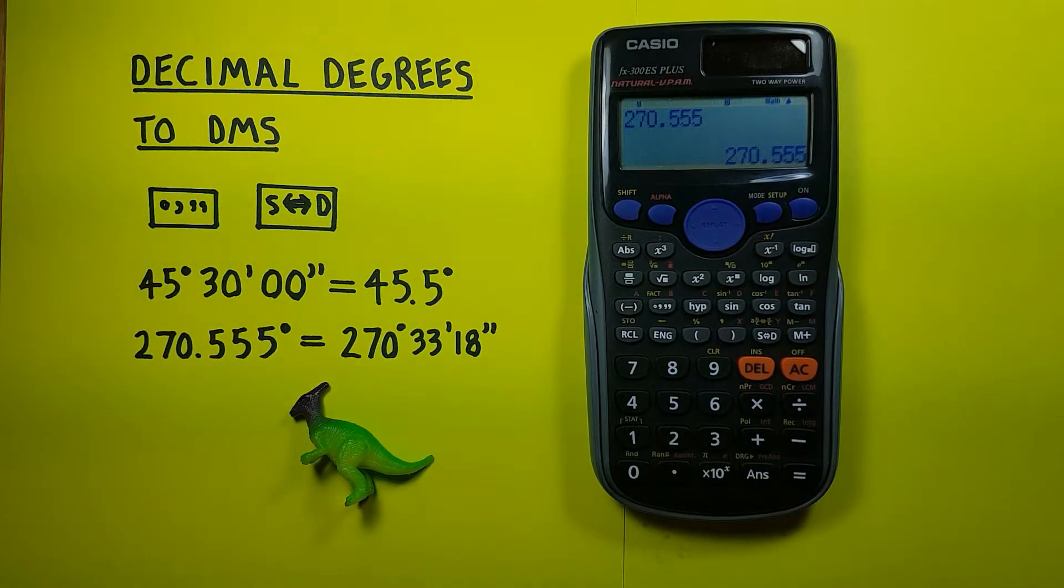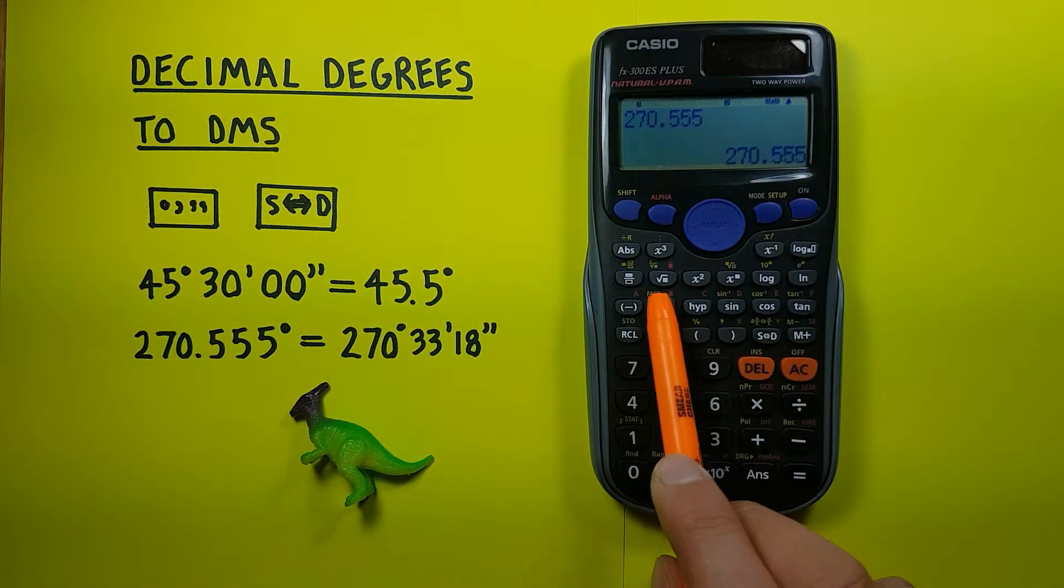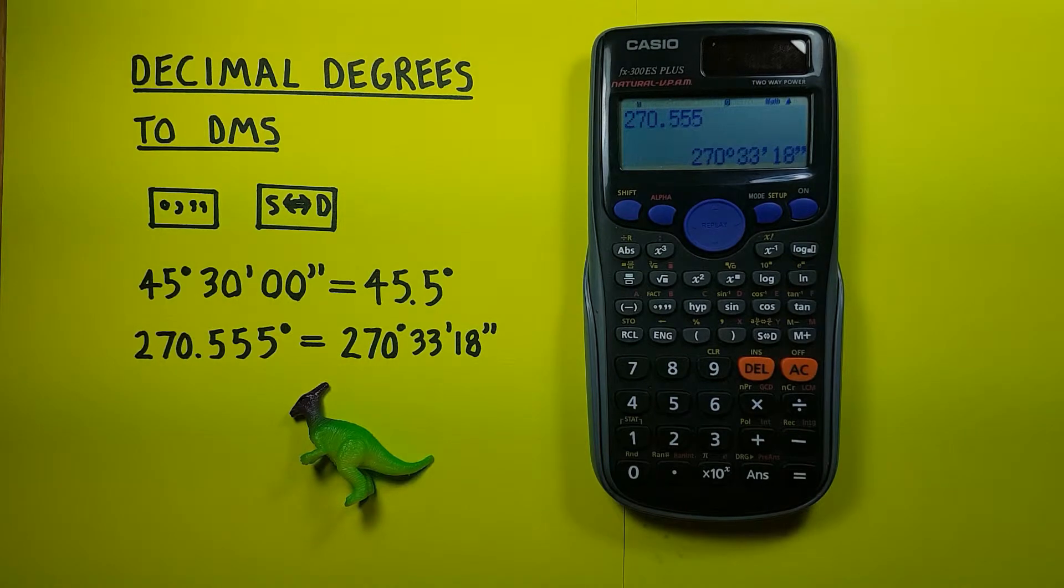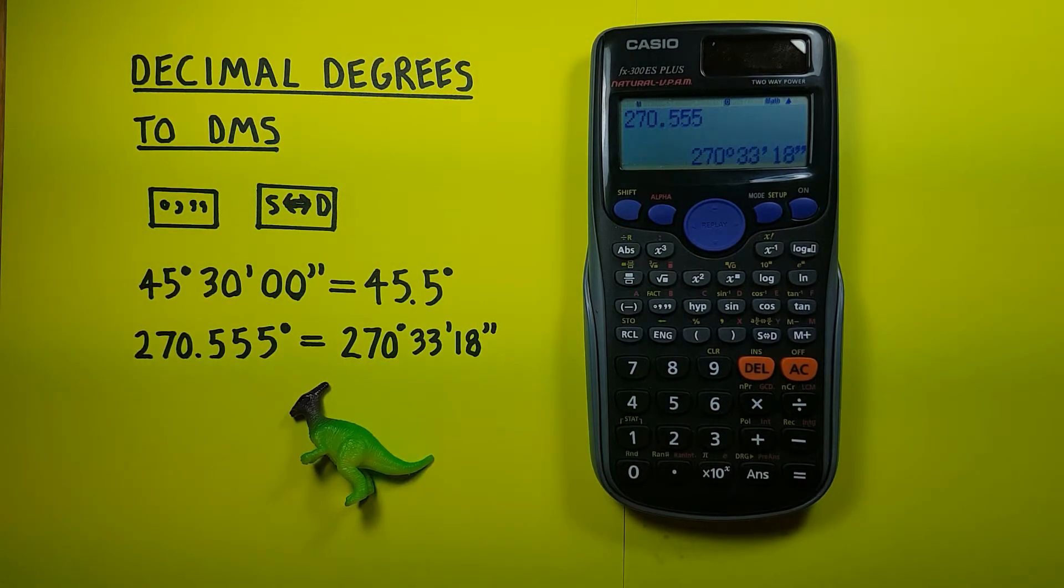And if we want to convert this to degrees, minutes, seconds, again, we just press the DMS key one more time. And you can see we now have 270 degrees, 33 minutes, 18 seconds.